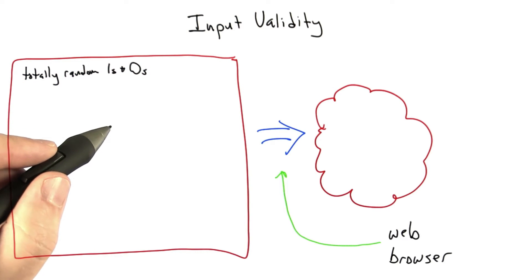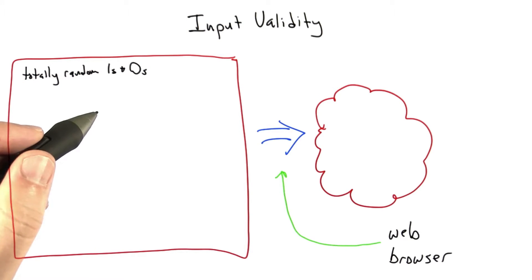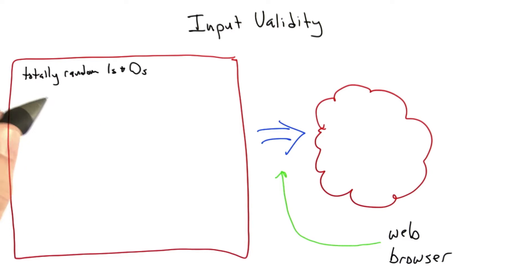And let's say for sake of argument that we're testing a web browser. And so the question we have to ask ourselves is, how much of the space of totally random ones and zeros constitutes a valid input for a web browser? And let's say that we're testing the rendering engine part of the web browser. So we're testing what happens when data comes over the web to the web browser in response to an HTTP request.